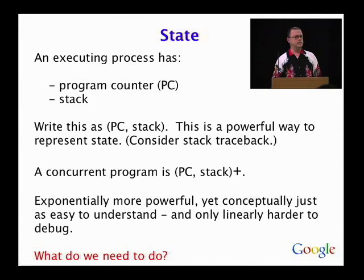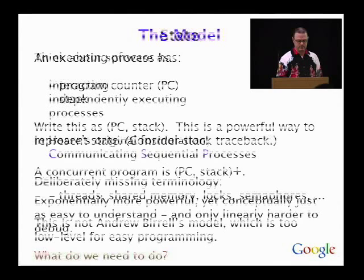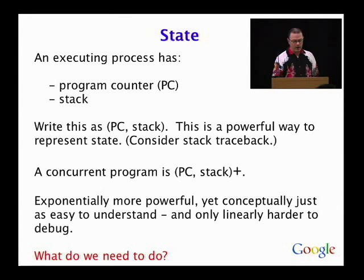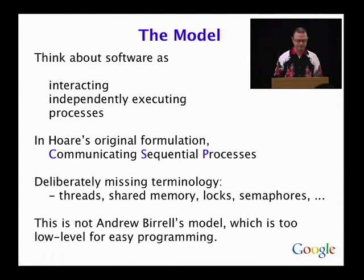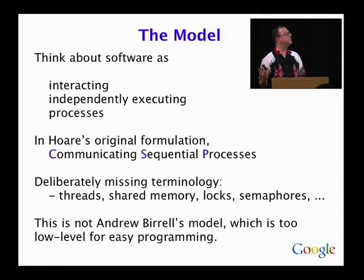Clearly, there's a huge layer of hand-waving I just laid down, but bear with me. The model is to think about software as a set of independently executing processes that interact. Tony Hoare wrote a paper in 1978 called Communicating Sequential Processes, which really set the ground for all of this work. All the stuff I'm going to be talking about is derived from that, but takes it quite a bit further.